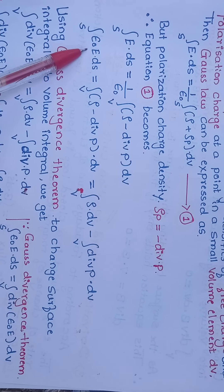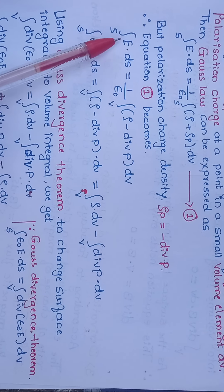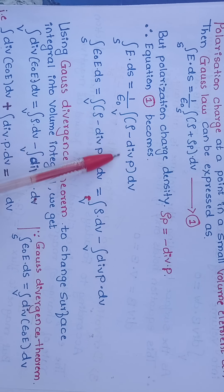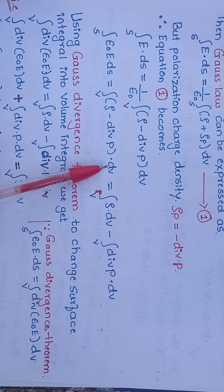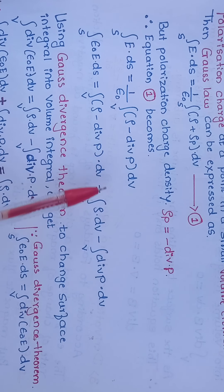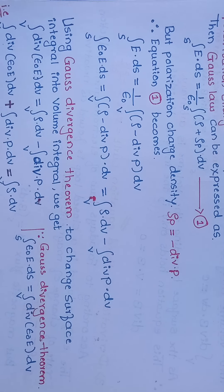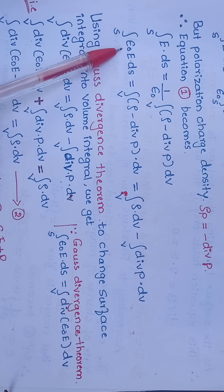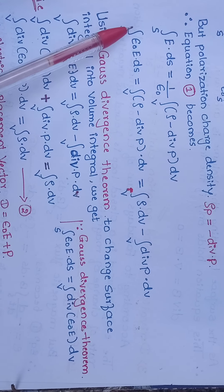Therefore, the surface integral of ε₀·E dot dS equals the volume integral of (ρ minus divergence of P) dv. Expanding the right-hand side gives the volume integral of ρ dv minus the volume integral of divergence of P dv. The left-hand side is a surface integral, and we need to change it into a volume integral.